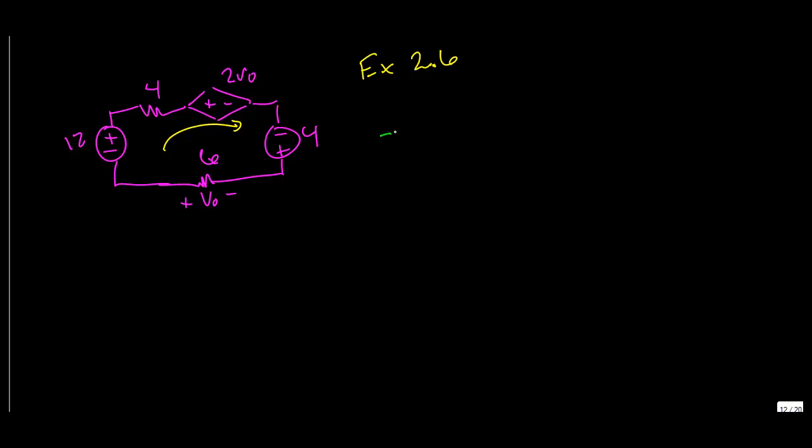So we have minus 12 volts plus 4 times I plus 2VO minus 4 volts, and we got plus 6 times I is equal to 0. Alright, so we got minus 12 and minus 4 is minus 16, and then we can move that to the right side. So you got 16 minus 2VO, and that's equal to 10I. Okay, easy enough.